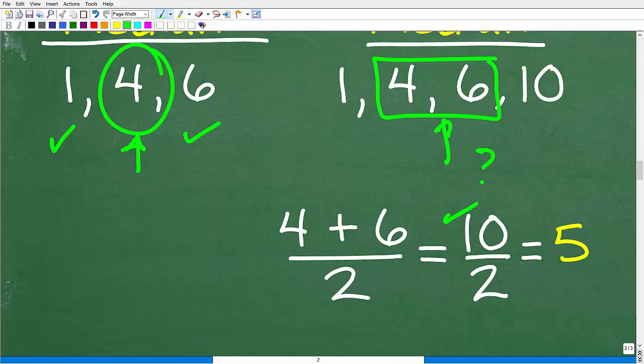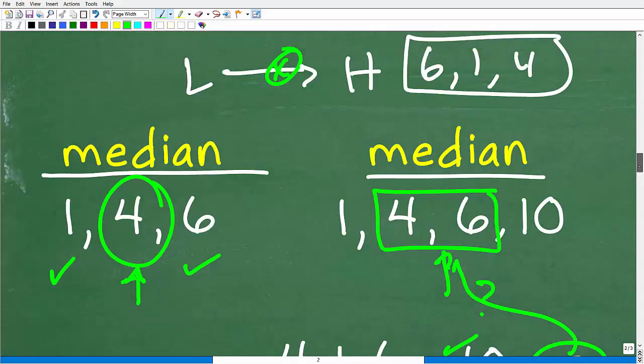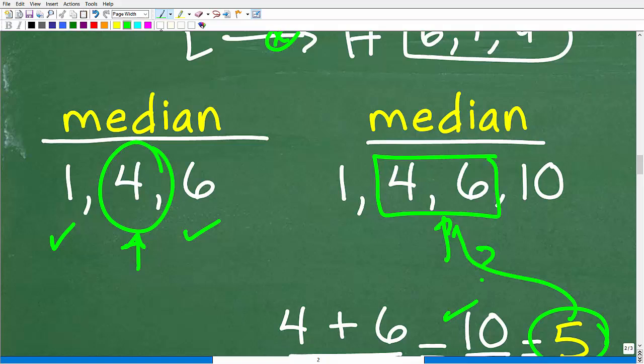So to figure out the median here, all we have to do is figure out the average between 4 and 6. So 4 plus 6 is 10, we have two numbers, so 10 divided by 2 is 5. So 5 is the median of this data set. Hopefully you now know the difference between the mean and the median, and this should be a pretty easy problem to figure out.